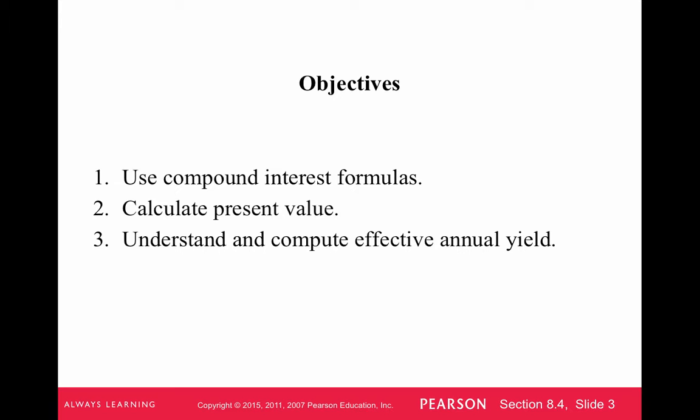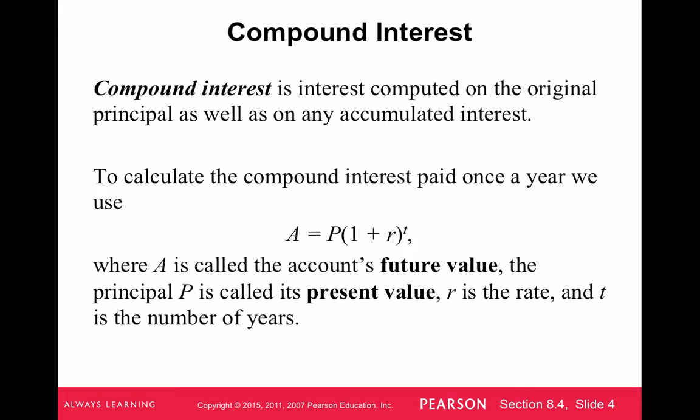So we're going to use compound interest formulas, calculate present value, and understand effective annual yield. Compound interest is interest computed on the original principal as well as any accumulated interest. It's kind of like an exponential growth — it grows on the growth that's already growing.